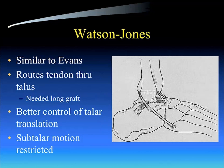The Watson-Jones was similar to an Evans and was originally described as taking the entire peroneus brevis to use as a tendon weave graft. However, they didn't stop in the fibula — they actually rerouted the tendon through a tunnel in the talar neck. You needed quite a long graft, harvesting the entire peroneus brevis at the musculotendinous junction, rerouted through the fibula and through the talar neck tunnel. This had better control of talar translation and minimized anterior drawer, but it significantly restricted subtalar motion.